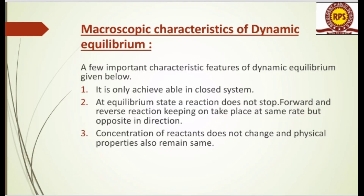There are some microscopic characteristics of dynamic equilibrium. First, it is only achievable in a closed system. At the equilibrium state, the rate of reaction does not stop — forward and reverse reactions keep taking place at the same rate but in opposite directions. At the equilibrium state, both the forward and reverse reactions proceed.